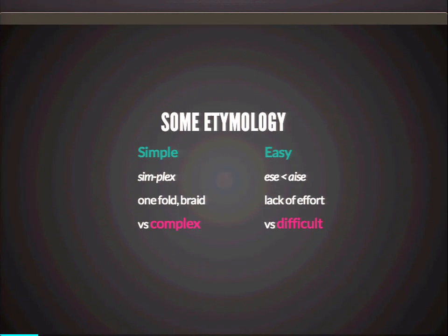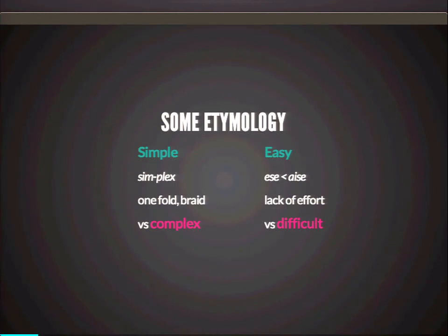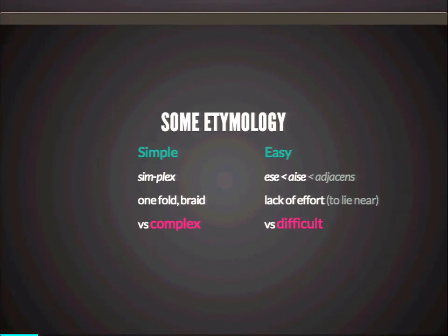Easy is actually a little bit harder to derive good etymologies for. I have two here: ease and aise — the first is Middle English and the second is Old French. Both of them have a lot of different senses to them, but the key one is this lack of effort idea — characterized by lack of effort. There's also another one that Hickey found which he says is questionable — it's adjacent, which is Latin and is the root of our word adjacent. And the most salient definition out of that is to lie near.